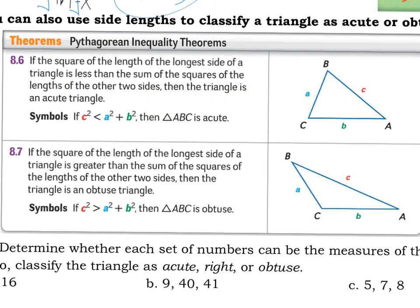This last topic is the Pythagorean Inequality Theorems. The Pythagorean theorem is only true for right triangles — but what if you have an acute or obtuse triangle? You can't use it to solve for a missing side, but you can use it to classify the triangle. Take the two shortest sides as a and b and the longest as c. If c squared is less than a squared plus b squared, you have an acute triangle. If c squared is greater than a squared plus b squared, you have an obtuse triangle. If it's equal, you have a right triangle.